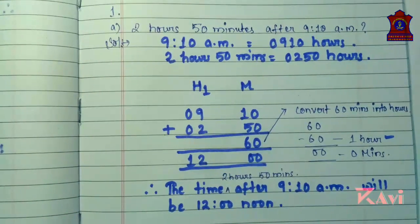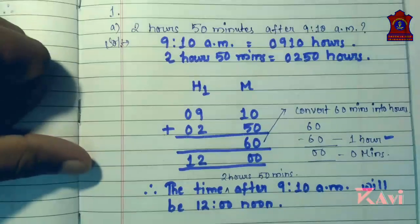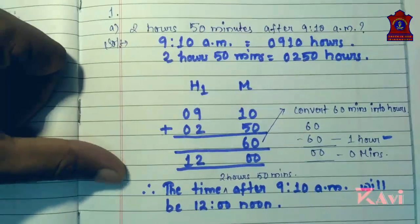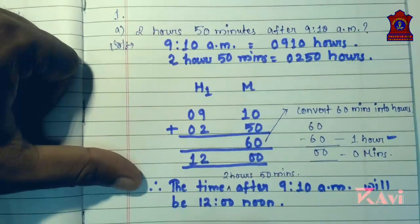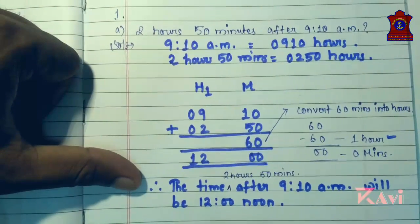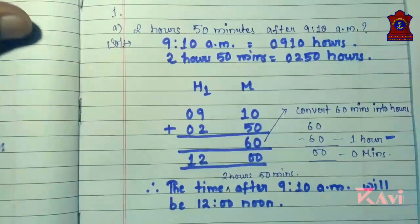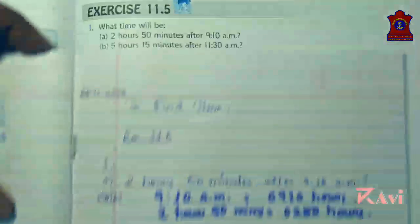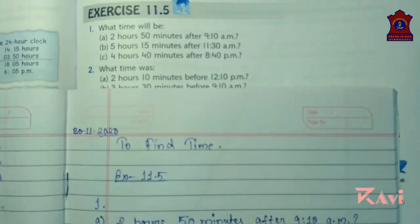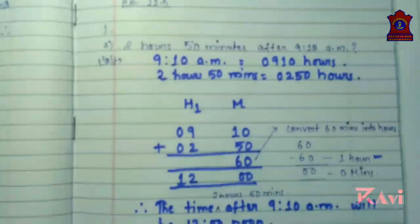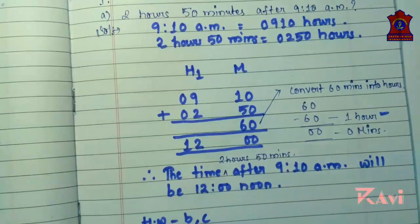Question B is your homework. Try doing B by yourself. C is also there, so try doing B and C by yourself.